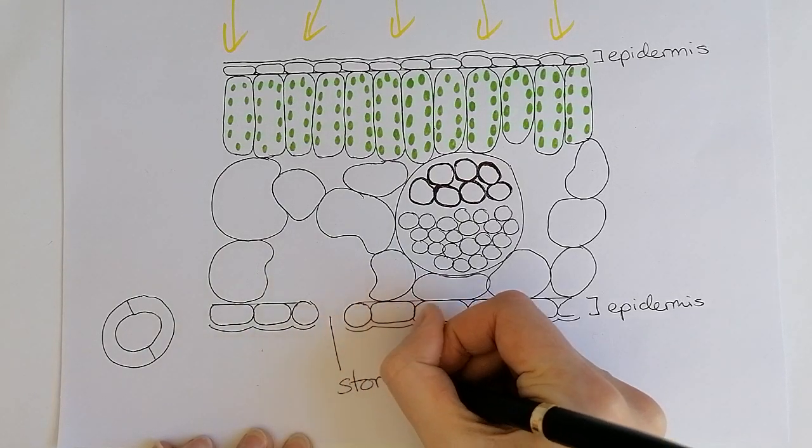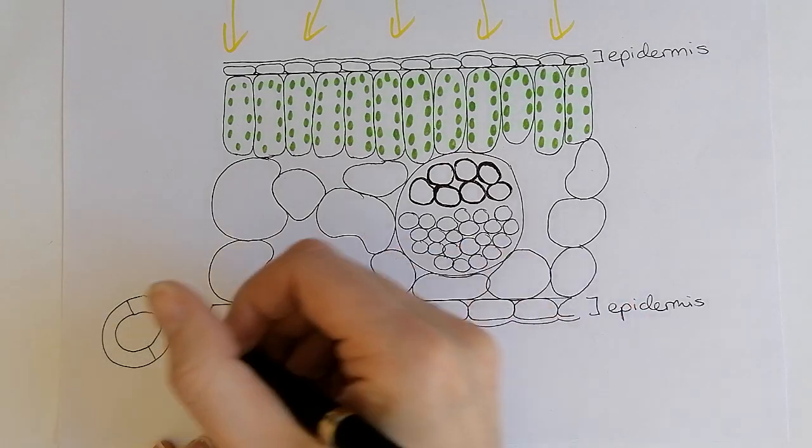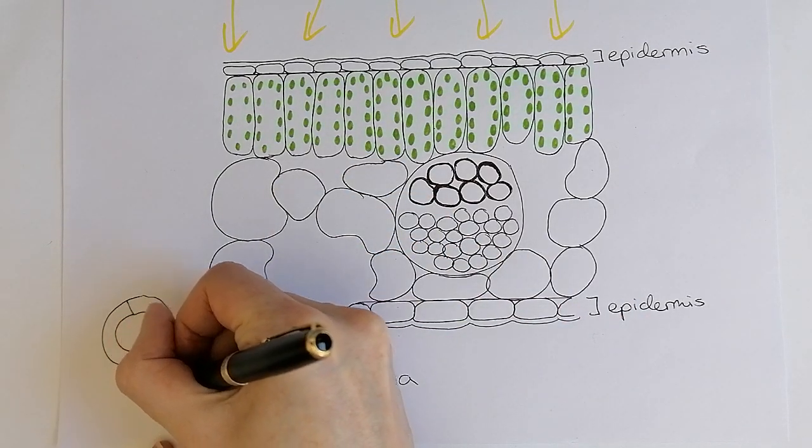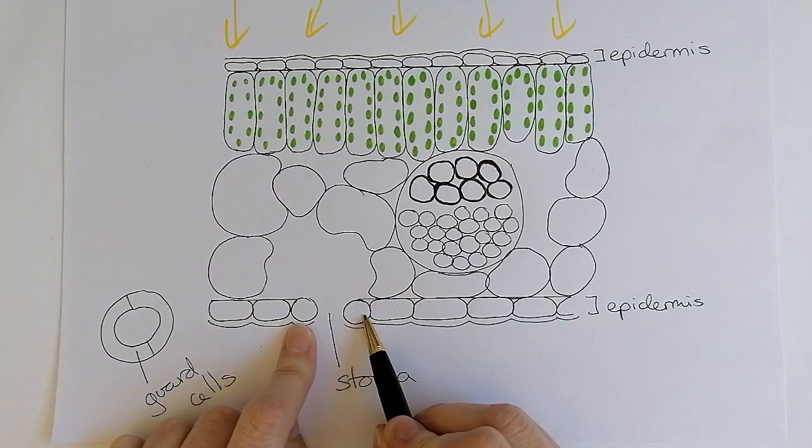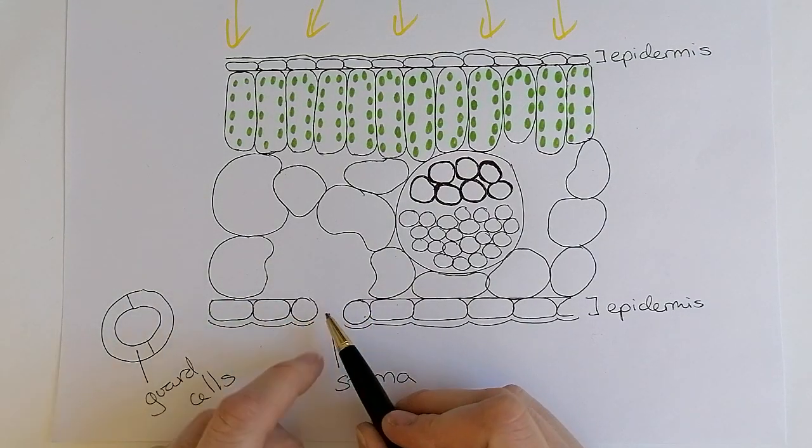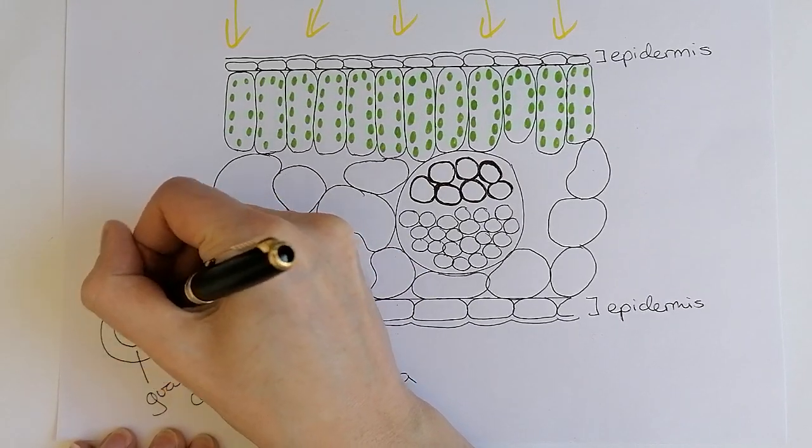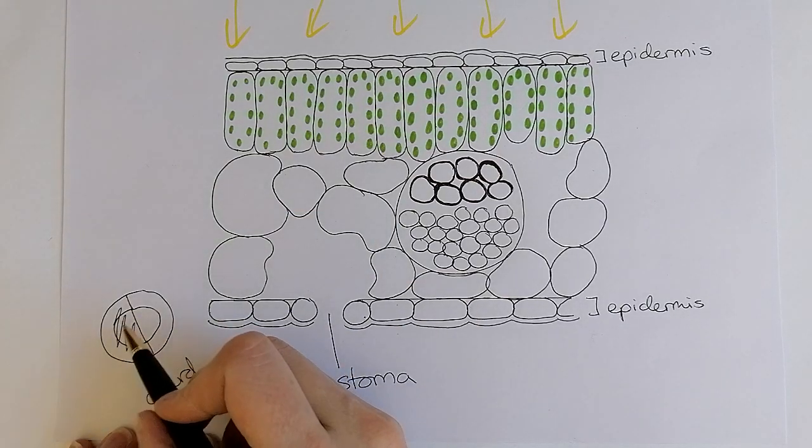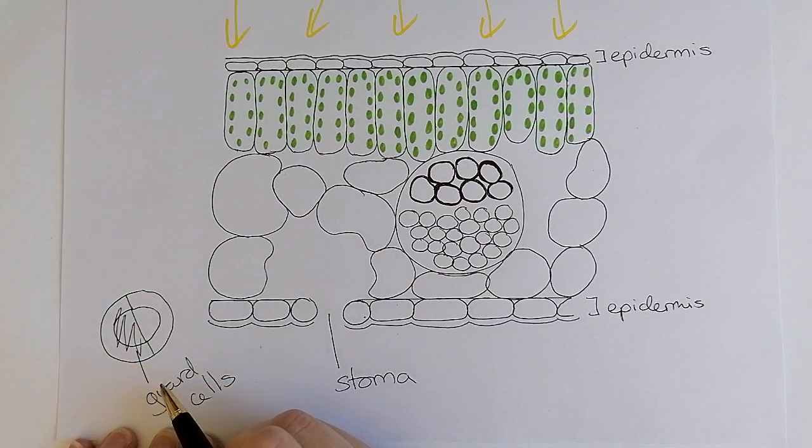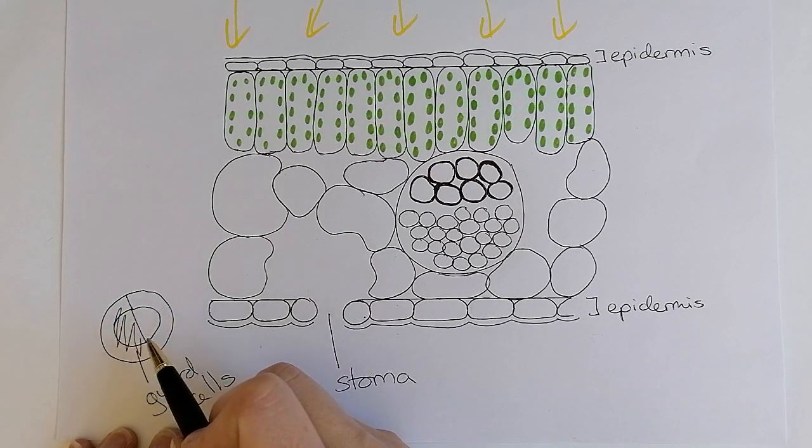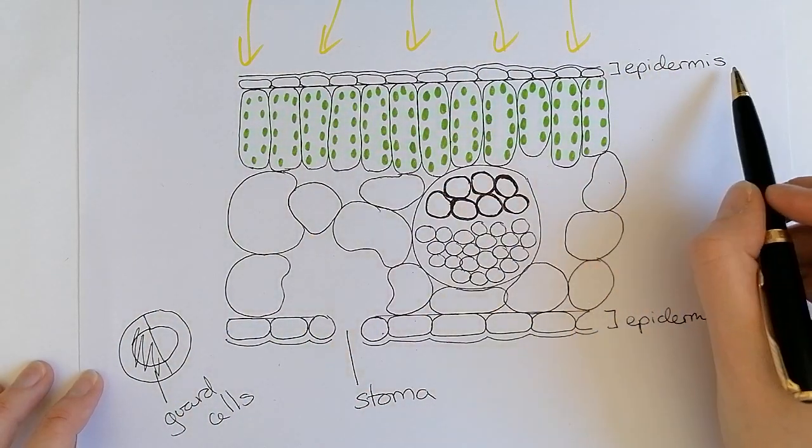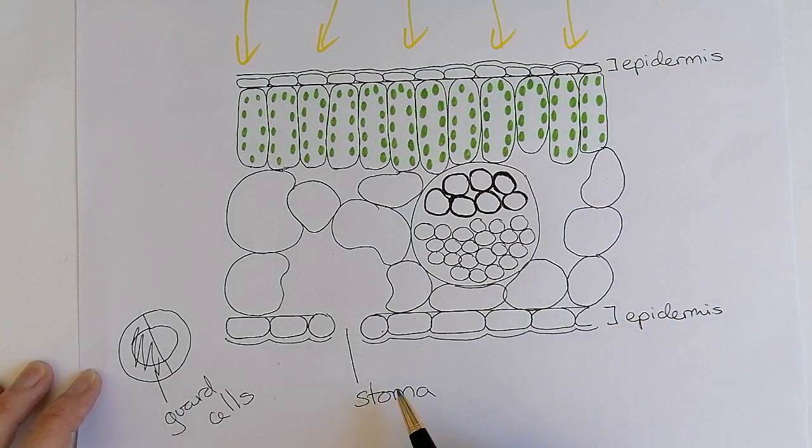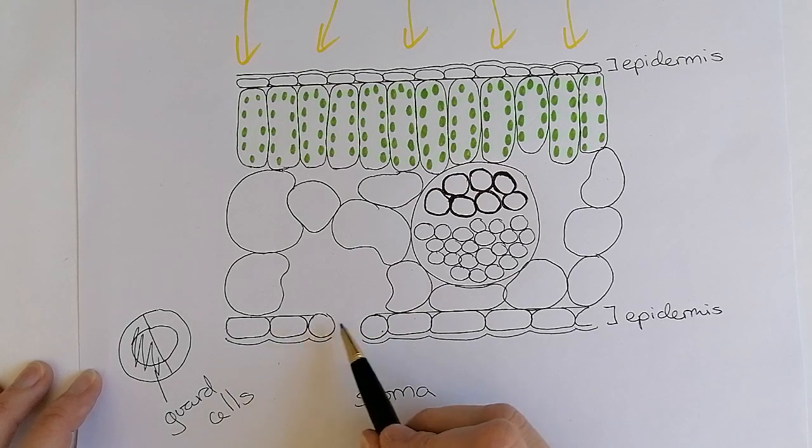Individual is called a stoma, and if there's more than one it's stomata. These cells on the outside are the guard cells because they guard the stoma. They allow the stoma to open and shut. Sometimes these guard cells fill up all of this area here, and filling that area would close the stoma. When they're in their normal position where it looks like a ring donut, gases can go in and out.